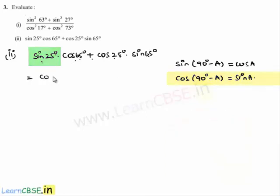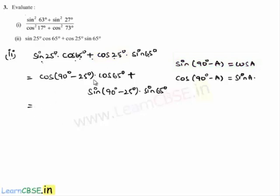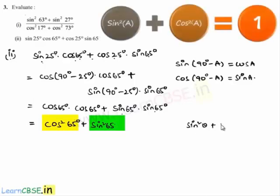Expressing the first term using this formula, sin 25° becomes cos(90° - 25°) = cos 65°, so we get cos 65° × cos 65°. The second term: cos 25° becomes sin(90° - 25°) = sin 65°, giving sin 65° × sin 65°. That whole expression equals cos² 65° + sin² 65°, which is in the form cos²θ + sin²θ, equal to 1 from identity 1.